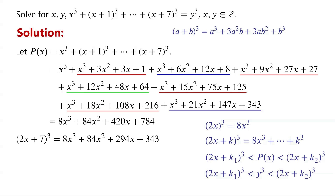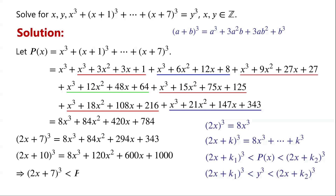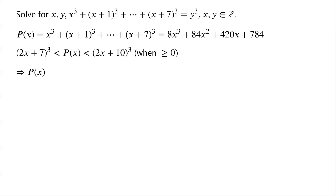Similarly, for x ≥ 0, k=10 is the smallest number such that (2x+k)³ > p(x), so k2 = 10. (2x+10)³ equals 8x³ plus 120x² plus 600x plus 1000. So we have (2x+7)³ < p(x) < (2x+10)³, which implies p(x) can only equal (2x+8)³ or (2x+9)³.